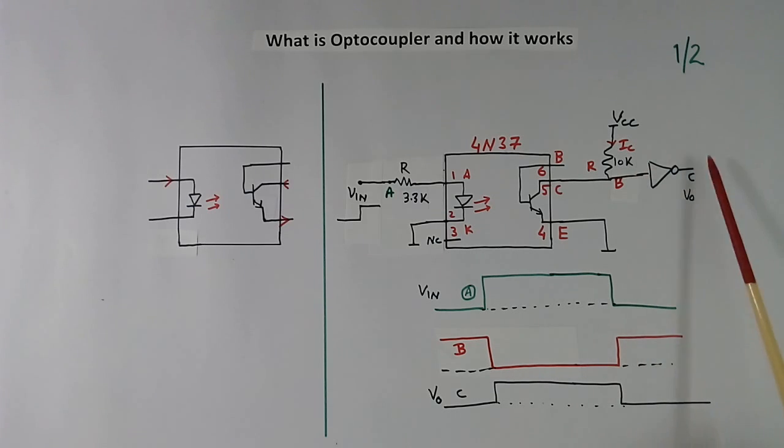Then here again it will invert. This low means this is high. Now suppose at input we remove the signal, then this current will stop. This light will stop, this current flowing will stop. So here voltage will go again high and this voltage will go again low.